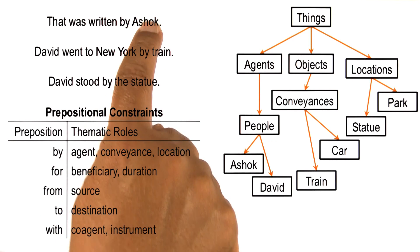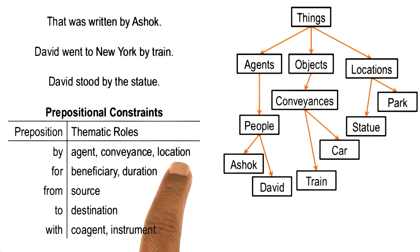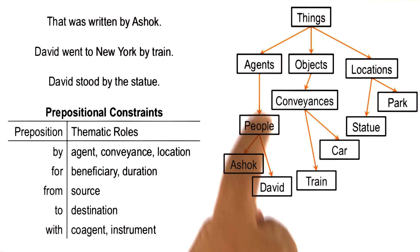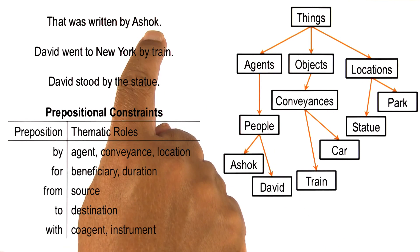Ashok a conveyance, or Ashok a location? We can look into this ontology. Ashok is people, which is an agent. So now we know that Ashok must be an agent.